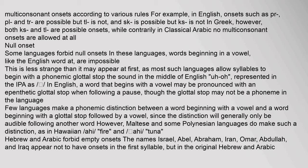For example, in English, onsets such as PR, PL, and TR are possible but TL is not, and SK is possible but KS is not. In Greek, however, both KS and TL are possible onsets, while in Classical Arabic no multiconsonant onsets are allowed at all.